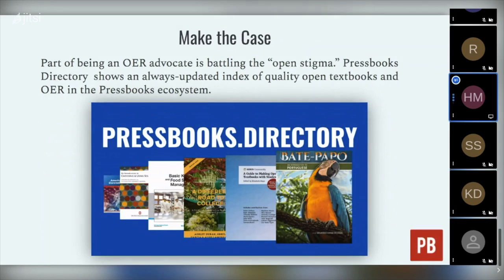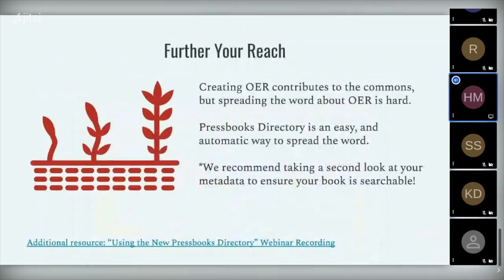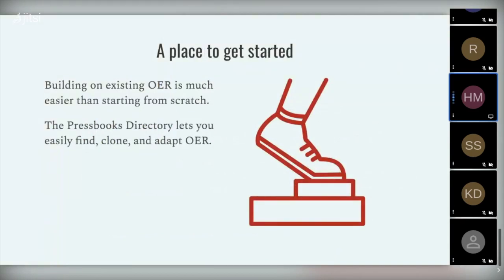We see a lot of this as we talk to Pressbooks users in higher ed: one of the issues of being an OER advocate is battling against that open stigma. Pressbooks makes it easy to find good quality OER to highlight and show to administrators who might be skeptical. Another big issue is furthering the reach — the directory helps spread content so it's easier to find. As long as your Pressbooks content is openly licensed, we can automatically include it in the directory, making it searchable and findable. Keeping metadata up to date in your book is important for this. And if you want to build off existing OER, the Pressbooks directory helps you find stuff that you can easily clone, adapt, download, or do as you wish.